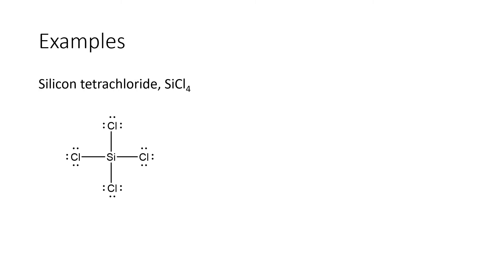Our first structure is for silicon tetrachloride. I've already drawn the Lewis structure here. What we want to do is focus on the central atom, which is the silicon, and so when I'm looking at the silicon it has one, two, three, four domains.